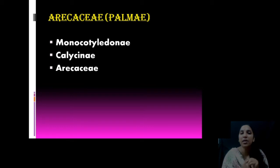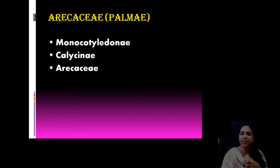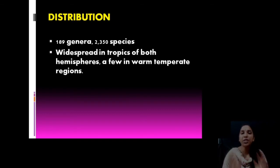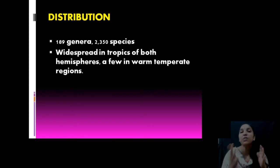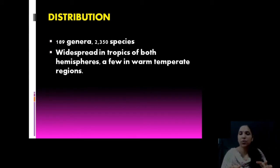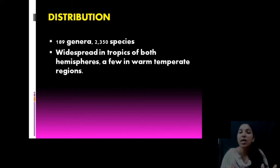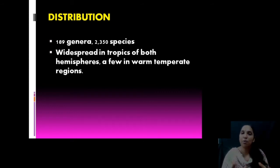Arecaceae is coming under division Monocotyledonae, series Calycinae, and family Arecaceae. About the distribution, this family is widely distributed having about 189 genera belonging to 2350 species. They are usually observed in tropical regions, and they also need warm temperature regions. They are very common and have highly economical importance.